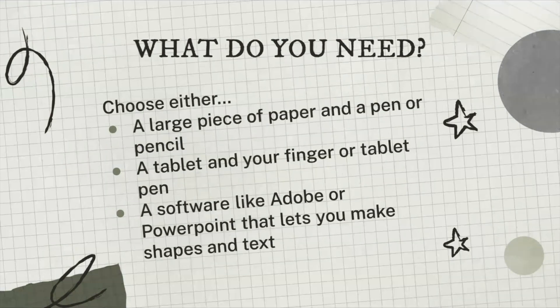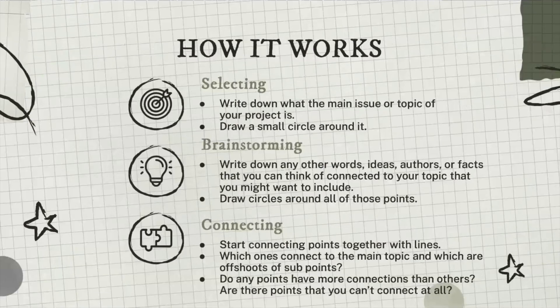Once you've picked out your materials, it's time to start outlining. First, write down what the main issue or topic of your project is, then draw a small circle around it.